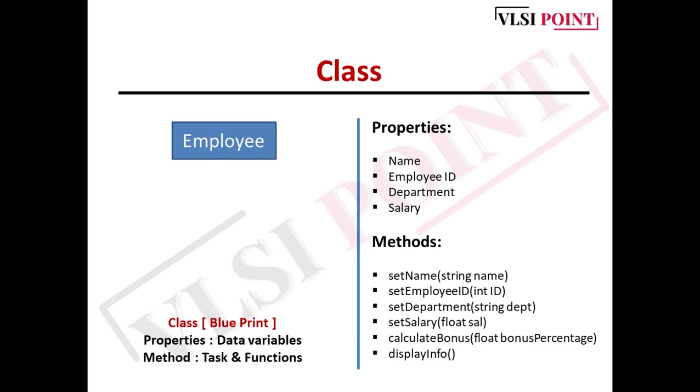In OOP, we define different types of methods to access the properties, and this is how we encapsulate the definition. These methods are used primarily to access the properties. For the Employee class, we have different objects like employee1, employee2, employee3 - these are objects of the class Employee.